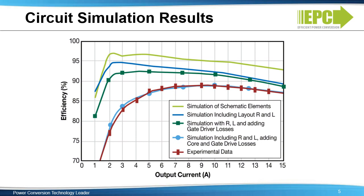To best illustrate this point, simulations with varying levels of complexity were made and the efficiency results on the vertical axis for each simulation were calculated as a function of load current on the horizontal axis and compared against an actual experimental result. The simplest simulation shown in light green only uses the device parameters to predict circuit performance. Adding layout parasitics reduces the predicted efficiency, as did adding losses from the gate drive circuitry. Adding the inductor core losses completes the picture and the simulation now closely matches the measured result. This circuit level simulation modeling is most useful to help correlate experimental measurements and gain a better understanding of device operation, since the measurements themselves are also limited in their scope and accuracy.